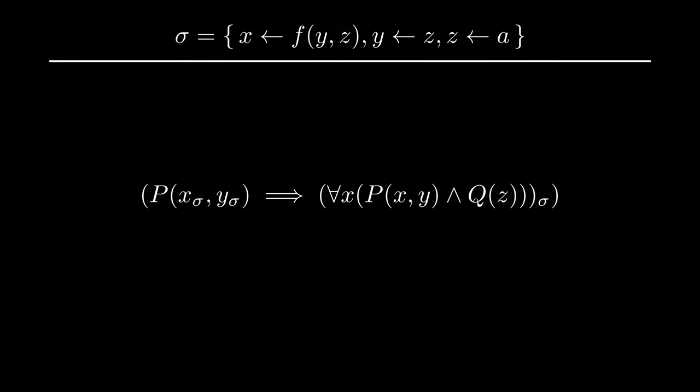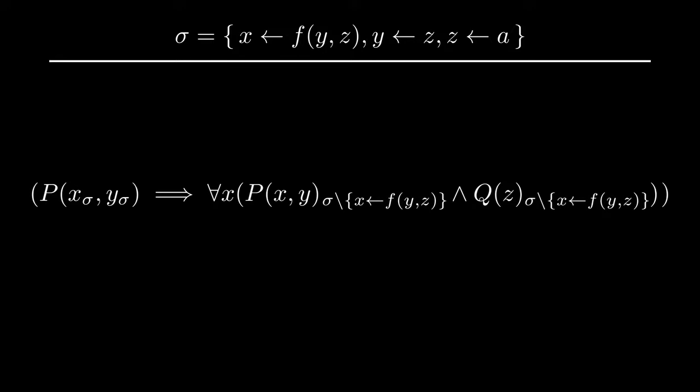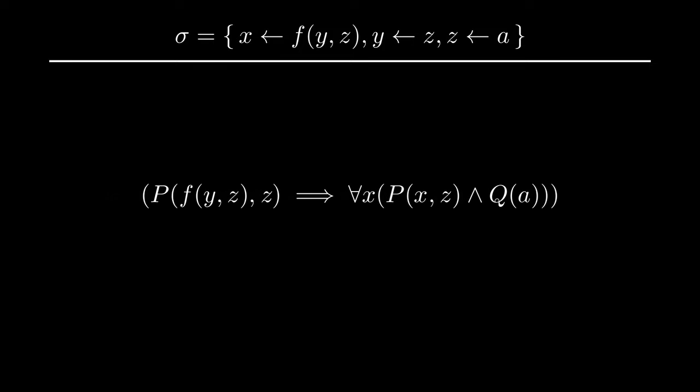However, in the case of the quantified formula, we notice that the variable x is bound, and therefore we cannot apply the substitution x becomes f, and we must remove it. We then propagate the substitution the same way as before until it is applied to all of the variables. Finally, we can apply the substitution in parallel to all of the variables. Notice how x was still replaced with f outside of the quantified formula, but not inside of it.